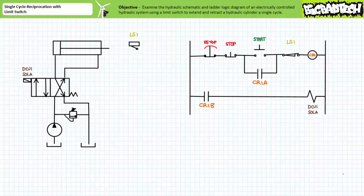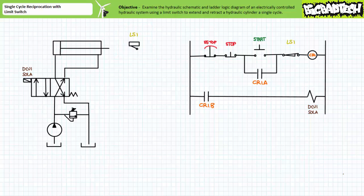At either the limits of extension or retraction, flow will cease and pressure will rise to the set point of the pressure relief valve. In this system's deactivated state we would expect the cylinder to be retracted. The physical limit of extension is a limit switch LS1, which when the tip of the rod contacts it will change to its opposite electrical state. Given there are components interfacing the electrical, mechanical, and hydraulic realms of our circuit, we should expect to see at a very minimum the solenoid DCV1 Sol A and the limit switch LS1 in our ladder logic diagram.